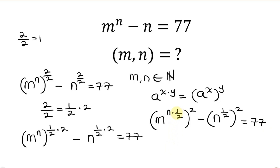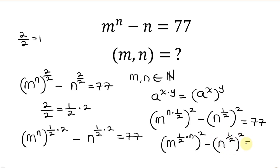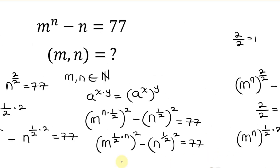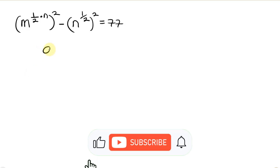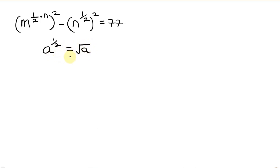Our next step will be to switch the positions of the exponents — since they are multiplying, switching their position does not change anything. So this expression is the same as m to the 1 over 2 times n, all raised to the 2. Now, from indices, we know that a to the 1 over 2 is the same as the square root of a. So this becomes the square root of m, raised to the n, all raised to the power of 2.